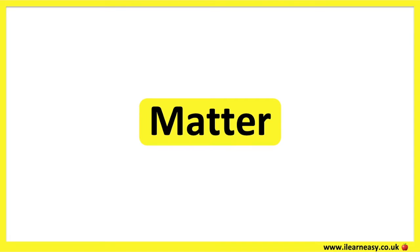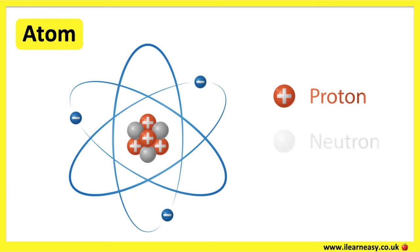Matter is made up of atoms. An atom consists of protons, neutrons, and electrons. Protons are positive, neutrons are neutral, and electrons are negative.